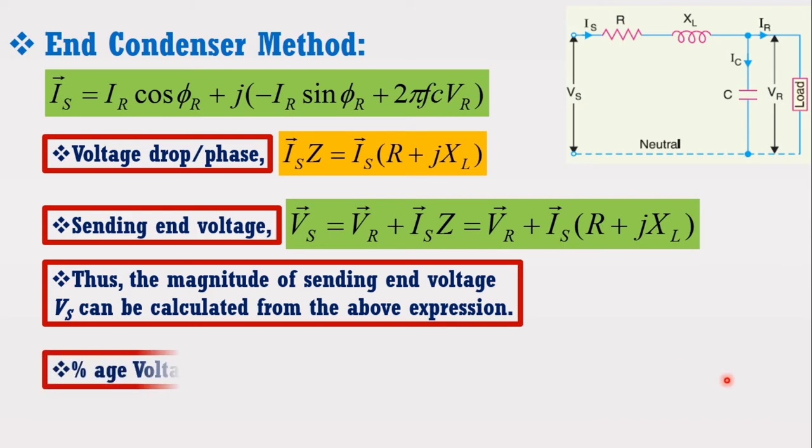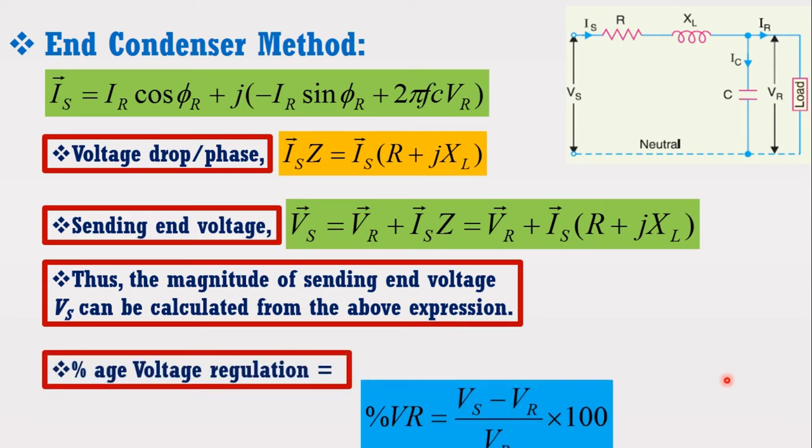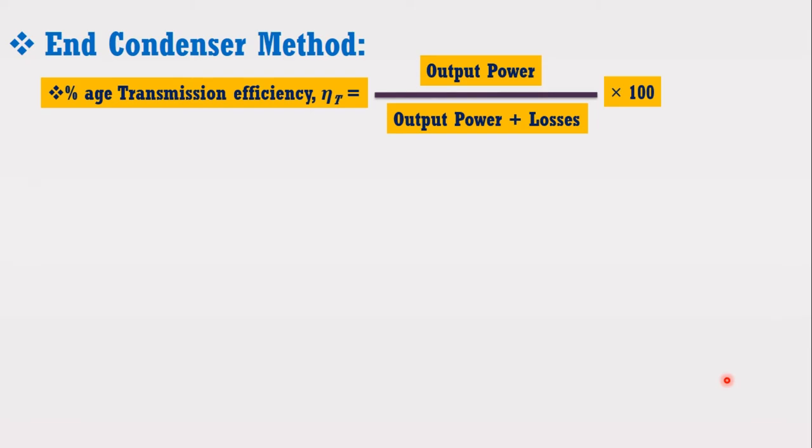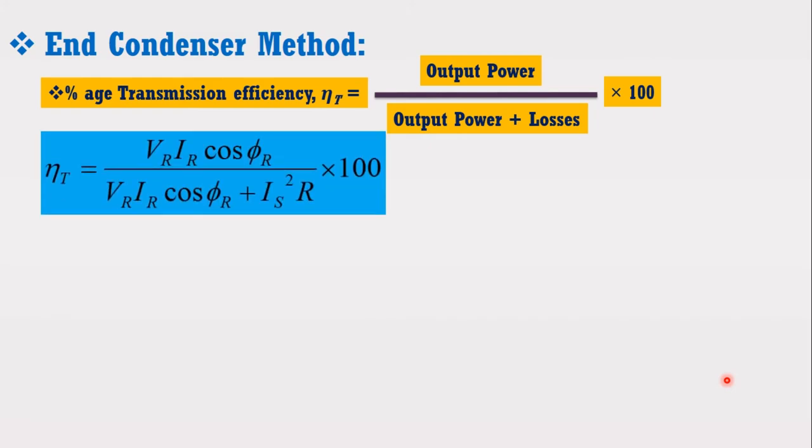Now, the percentage voltage regulation for this method is given by the following expression. Whereas the percentage transmission efficiency for this method is equal to output power upon input power into 100. By putting the values of output power and input power, we get the following expression.